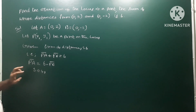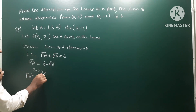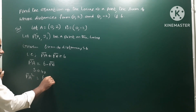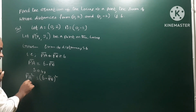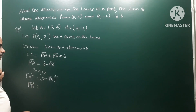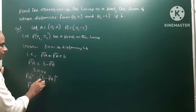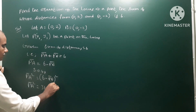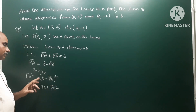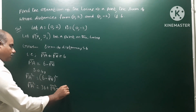After squaring, PA squared equals (6 minus PB) whole squared. Expanding using the (a minus b)² formula: a squared means 6 squared which is 36, b squared means PB squared, minus 2ab means minus 2 times 6 times PB, which gives minus 12PB. So PA squared equals 36 plus PB squared minus 12PB.